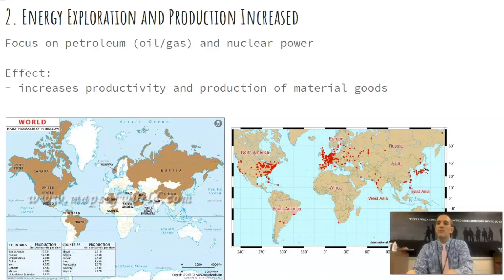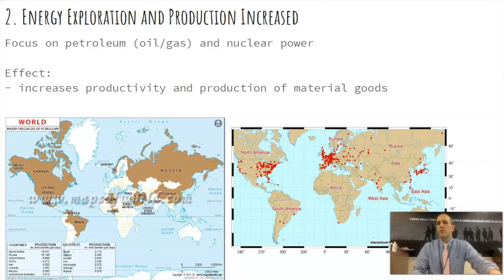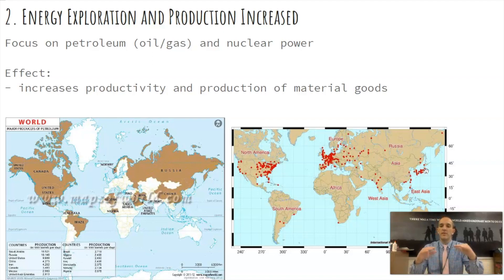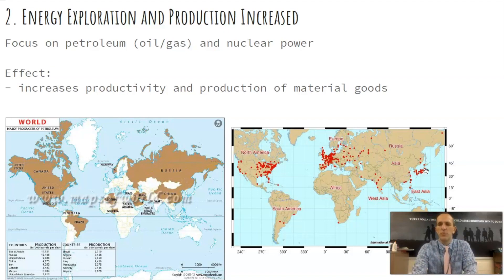Nuclear power reduces the burden and reliance on oil and gas. However, the problem with nuclear energy — and we saw this in Chernobyl, great show on HBO by the way — is that their nuclear reactor in the Soviet Union had a meltdown. The meltdown caused the release of atomic particles, which leads to radiation poisoning. That's the fear of using nuclear power.